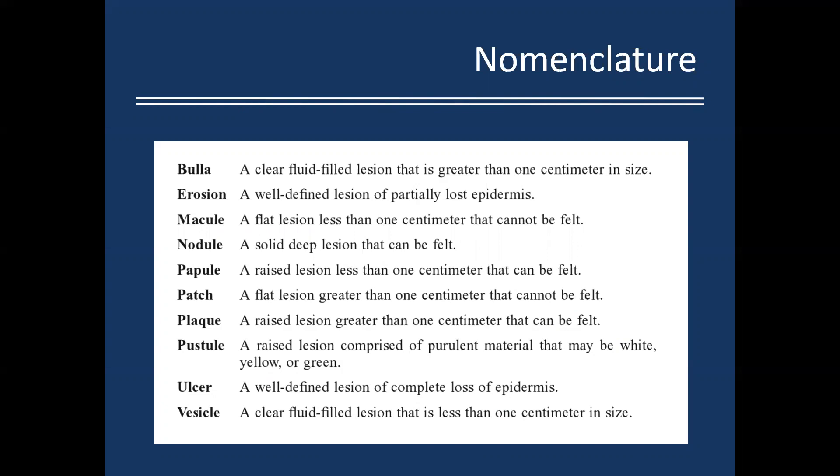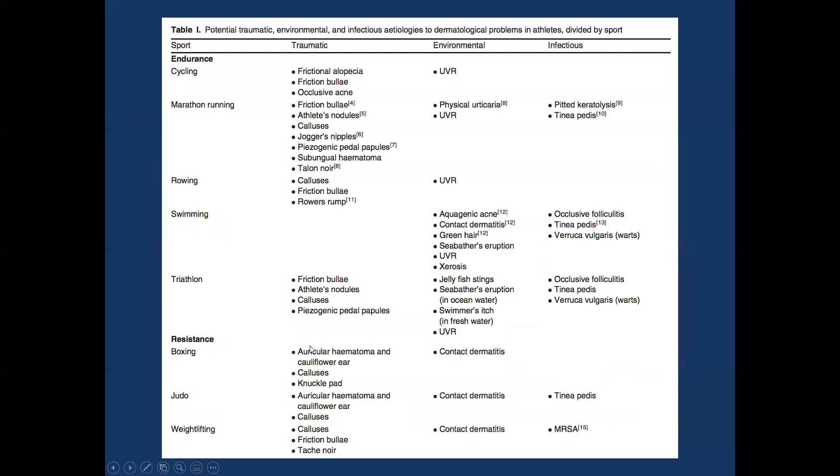A macule is a flat lesion less than one centimeter. A patch is a flat lesion greater than a centimeter. A nodule is a solid deep lesion that can be felt. Plaques are raised greater than one centimeter. And pustules are raised lesions typically with purulent material inside.